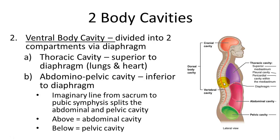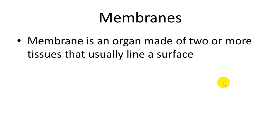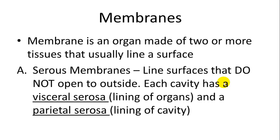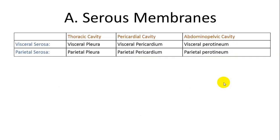Within these cavities, you have specialized structures called membranes, which secrete fluid to prevent friction. A membrane is an organ, the smallest type of organ, because it has two or more tissues that line a surface. Serous membranes do not open into the outside and they are all along the surface. Each cavity has a visceral serosa, which is a serous membrane, and a parietal serosa, the other type. The visceral surrounds the organs and the parietal serosa surrounds the whole cavity.